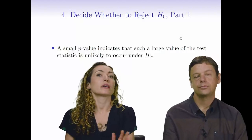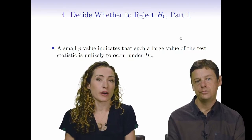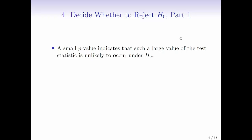So now we have decision time. We're going to need to decide whether to reject the null hypothesis. As we've said, a small p-value suggests that such a large value of the test statistic is unlikely to occur under the null hypothesis.